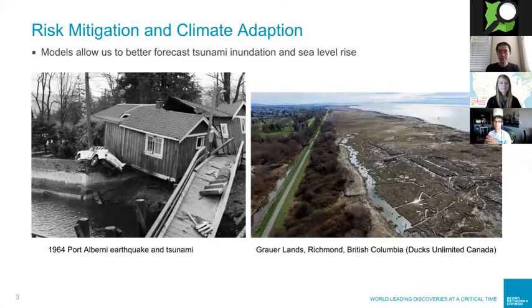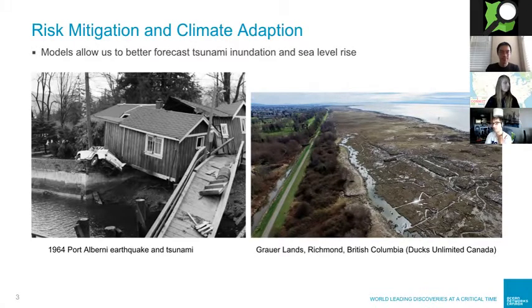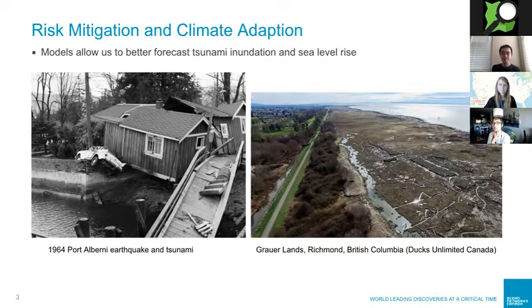As you can see from this image on the left, I live in a place that's very earthquake-prone. In 1964, Port Alberni had a major earthquake and you can see some of the destruction that took place. Currently, the picture on the right shows impacts of sea level rise, just south of Vancouver looking towards Seattle and Puget Sound.